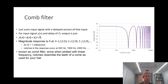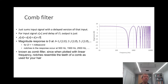Comb filtering is often problematic. It results in these notches in the spectrum at half a period, one and a half periods, two and a half periods, and so on of delay. Essentially, the magnitude response is zero at given frequencies associated with 1/(2×delay), 3/(2×delay), 5/(2×delay), and so on.